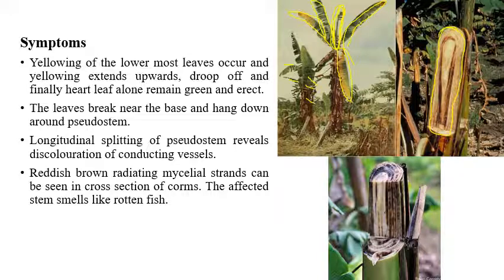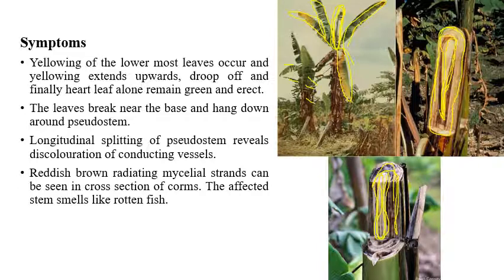If we cut open the stem, brown color vascular discoloration of the pseudostem can be seen. In later stages, black color vascular discoloration can also be seen, though brown discoloration is most common. The infected stems produce a gummy ooze-like substance from vascular bundles. Reddening of internodes and mycelial growth can also be observed. The disease produces a rotten fish-like smell due to the production of trimethylamine. This is one of the very important diseases in banana.